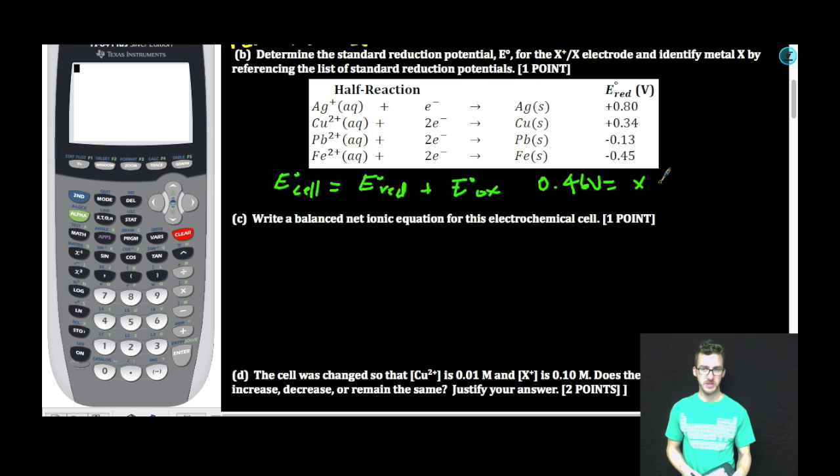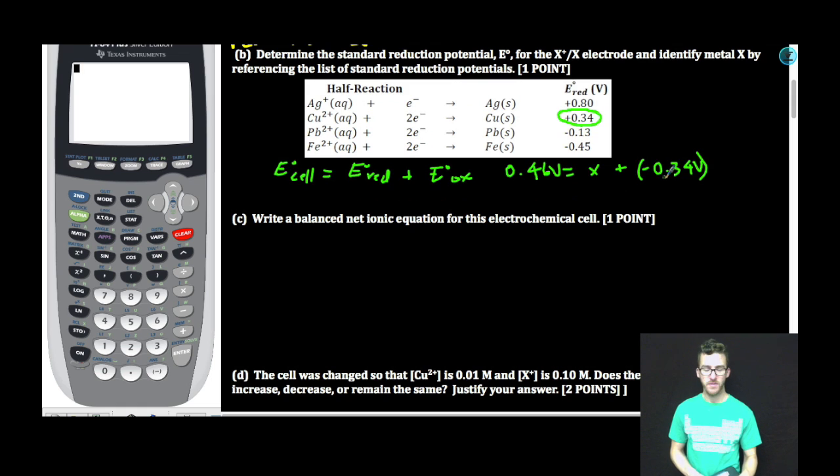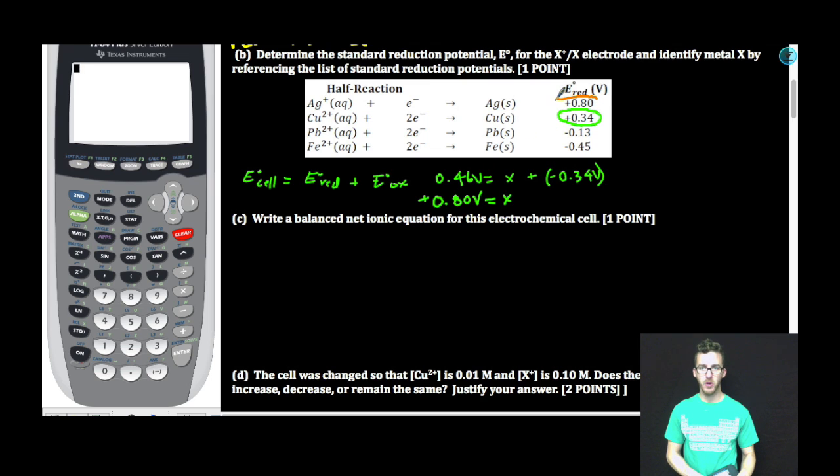We just determined that the X electrode must be acting as the cathode, and that copper is the anode. So we'll be looking for our reduction potential, and we know that the oxidation potential of copper, be careful here, is negative 0.34 volts. Remember, we've decided copper is the anode, the place that oxidation occurs, and we're provided with the reduction potential list. Tricky. So if I just subtract a negative 0.34 from each side, I get X is equal to positive 0.80 volts. Use your calculator if you don't believe me. It's free response, so you totally can. So look at the reduction potential chart. The most likely identity of the X electrode, silver. Silver is the identity of metal X.